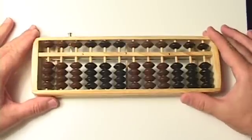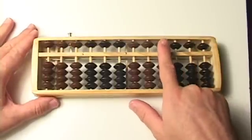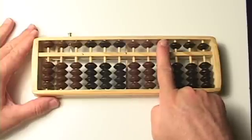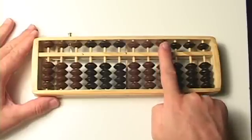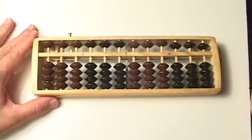So you remember that we're always going to start in this column right here. This is called the ones column. And this is where we always use the numbers zero through nine.